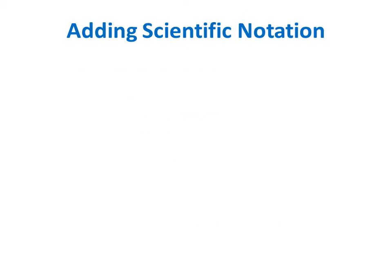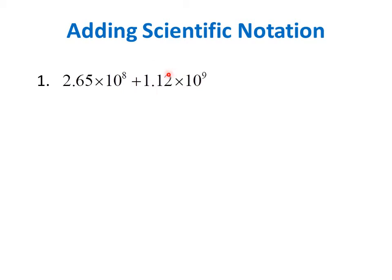Let's add some numbers in scientific notation. First, let's say we have to add 2.65 times 10 to the 8 and 1.12 times 10 to the 9. Notice that they have different exponents, so first we have to rewrite the number with the larger exponent so that the 9 becomes an 8.